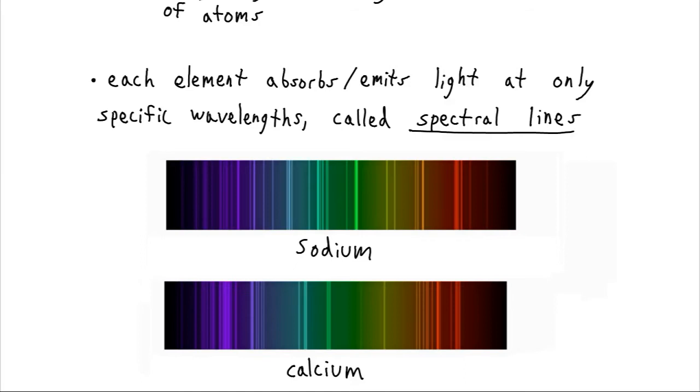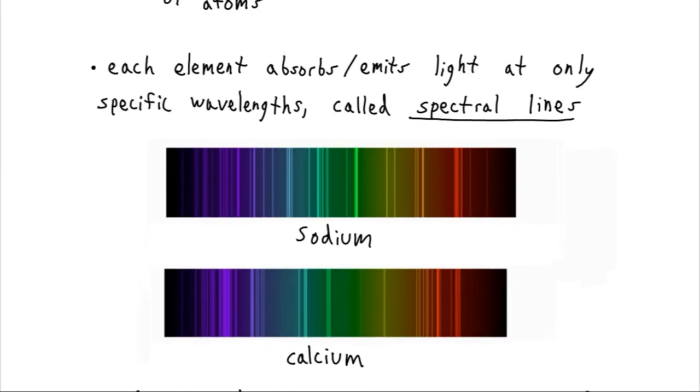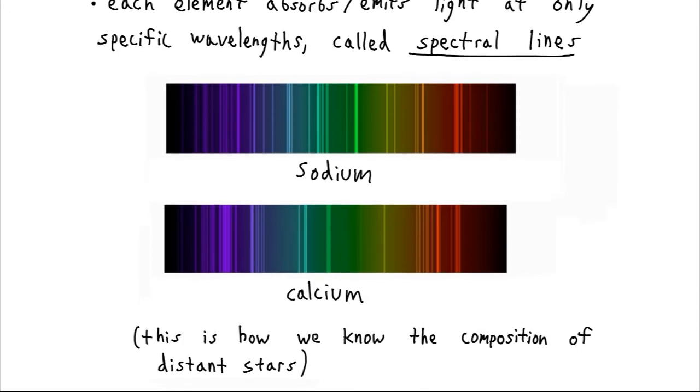And you can see that these are different between the calcium and the sodium. These provide unique fingerprints for all the different atoms. This is actually how we know the composition of distant stars.